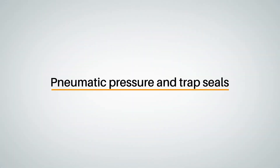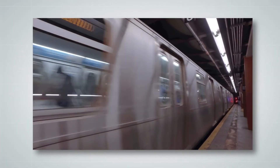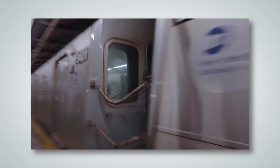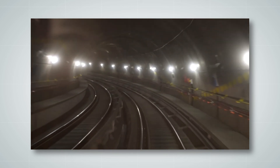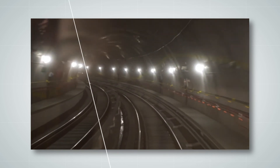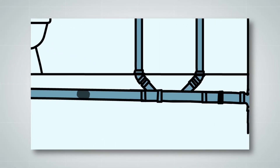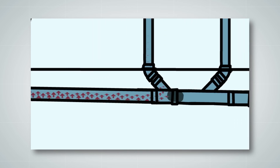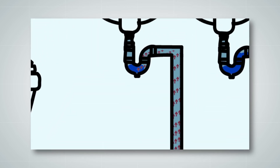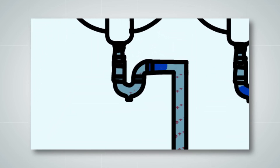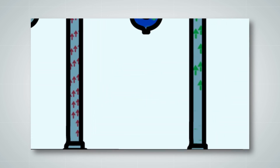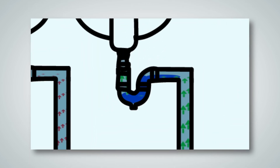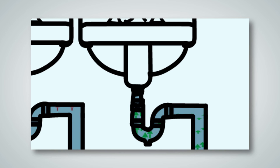In order to understand the effect of pneumatic pressure on a trap seal, think of a subway moving rapidly through a tunnel, pushing the air in front of the train so as to increase positive pressure ahead of the train, while sucking air from behind the train, causing negative pressure in that part of the tunnel. Effluent flowing rapidly down horizontal sanitary drainage piping can create enough negative pressure behind the flow to draw the trap seal water away from the trap, and can create enough positive pressure ahead of the flow to push any effluent present between the trap seal and horizontal piping back into the fixture.